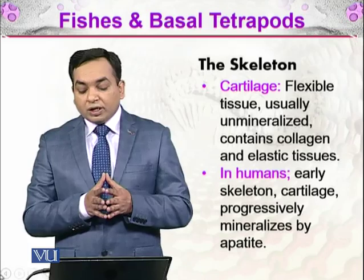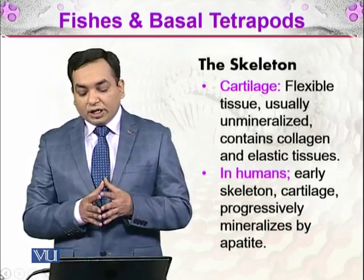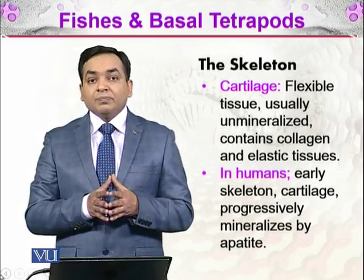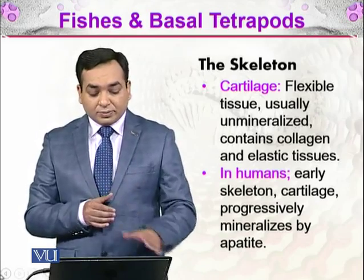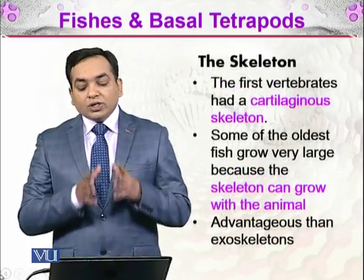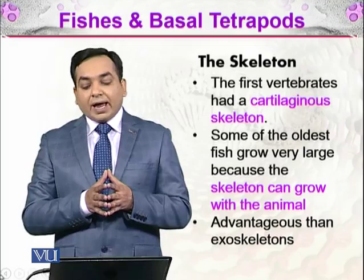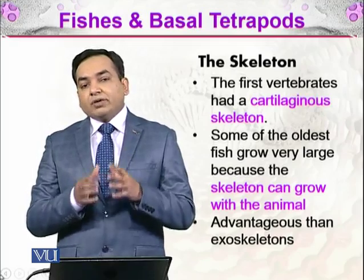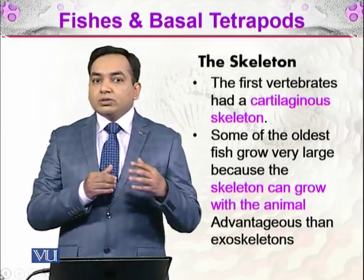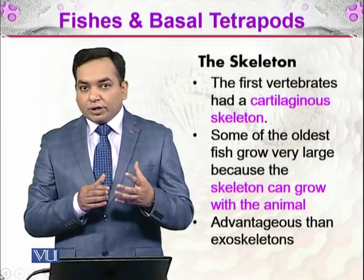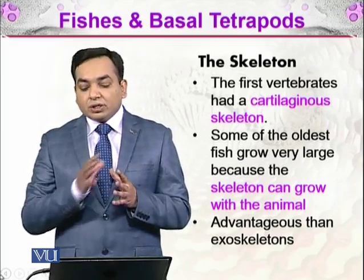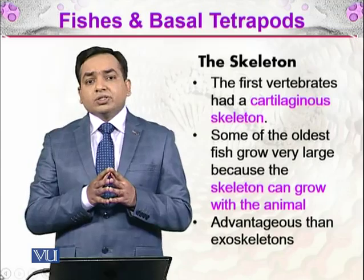In humans, the early skeleton is made up of cartilage and is progressively mineralized by apatite. The first vertebrates had a cartilaginous skeleton — if we talk about the first organisms that contained the vertebral column, they had this cartilaginous skeleton.